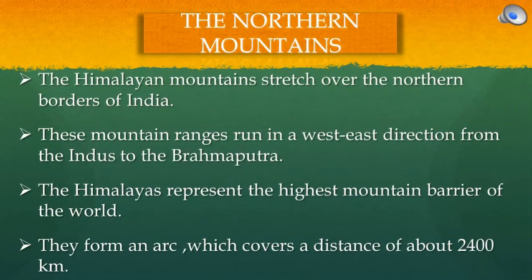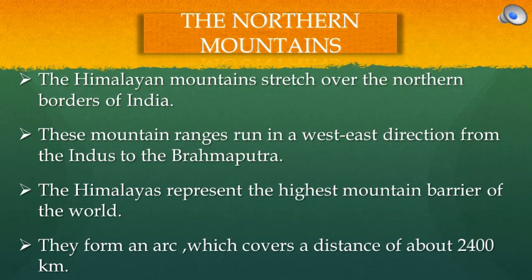The Himalayan mountains stretch over the northern borders of India. These mountain ranges run in a west-east direction from the Indus to the Brahmaputra. The Himalayas represent the highest mountain barrier of the world. They form an arc which covers a distance of about 2,400 km.